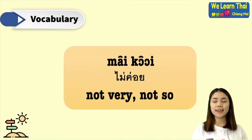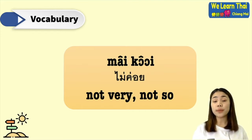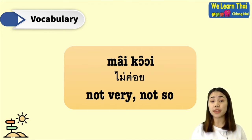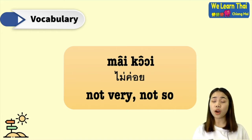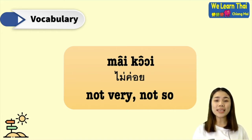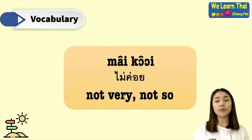Next is 'my koi,' which means 'not very' or 'not so.' Most of the time we pair the word 'my koi' with an adjective. For example, you can say 'my koi ron,' meaning 'not so hot,' or 'my koi nhiu,' meaning 'not so hungry.'